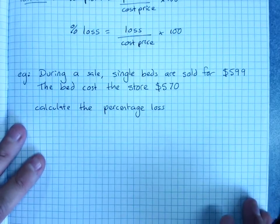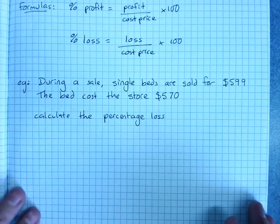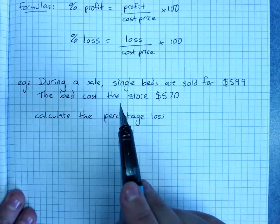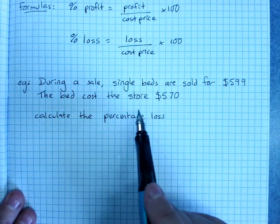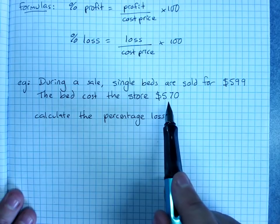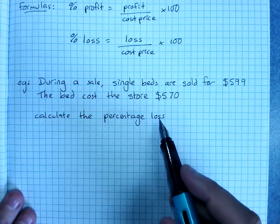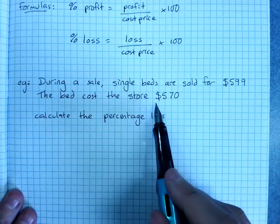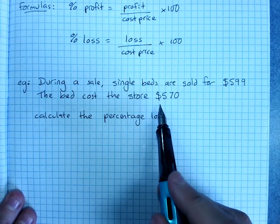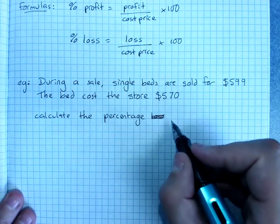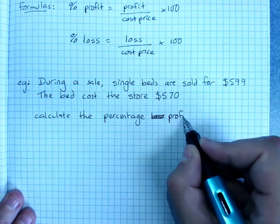So for example, during a sale, single beds are sold for $599 and the bed cost the store $570. And I've said calculate the percentage loss, but there's a problem there because our selling price is more than our cost price. So of course we are calculating percentage profit.